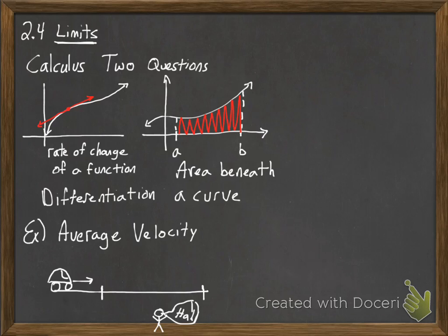So what he's computing is your average velocity. Now say we were interested in knowing your speed at exactly, let's say, this point in time. So we want to know what we would call your instantaneous speed.